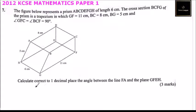We need to calculate, correct to one decimal place, the angle between the line FA and the plane GFEH, worth three marks. So here we have the plane. Let's identify that plane.